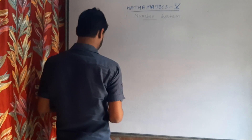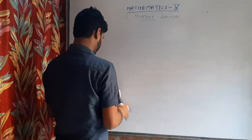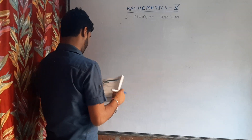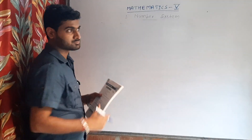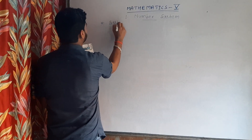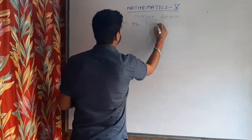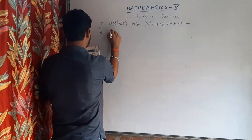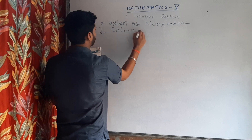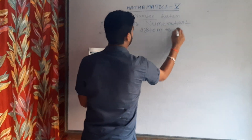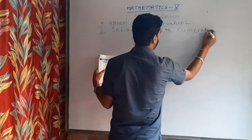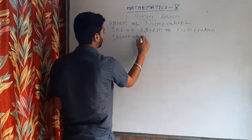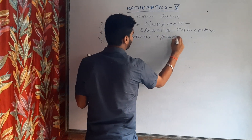Now, system of numeration. There are 2 systems of numeration. First, the Indian system of numeration. Second, the international system of numeration.